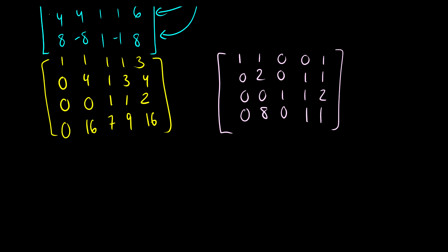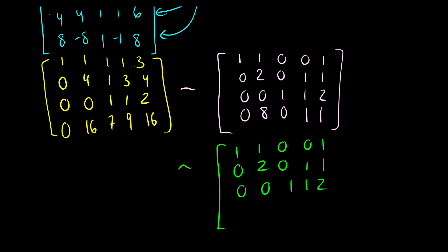Now take row 4 and subtract 4 times row 2 from it. Leaving rows 1, 2, and 3 the same, row 4 becomes: [0, 8-8, 0, 1-4 | 1-4] = [0, 0, 0, -3 | -3].